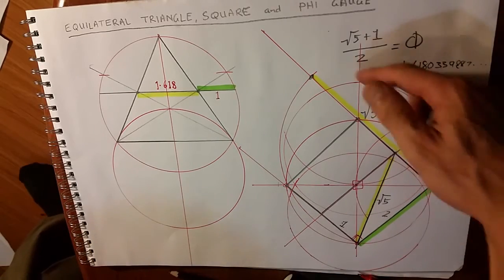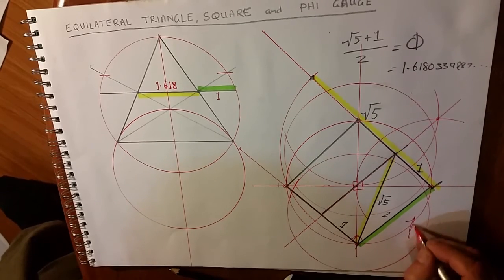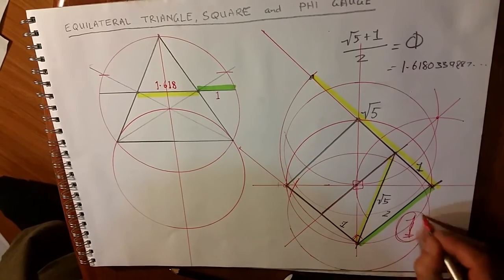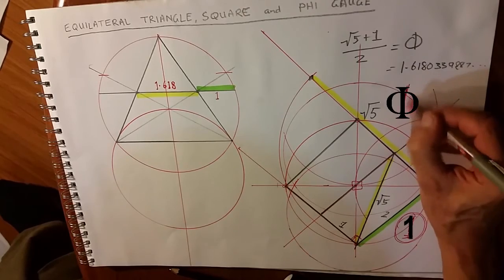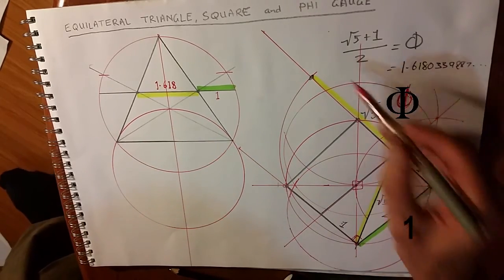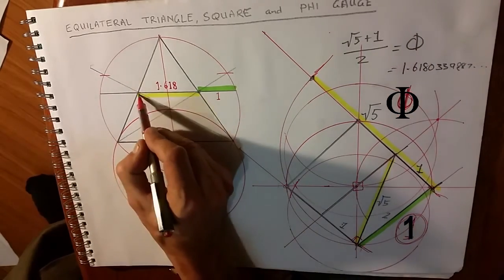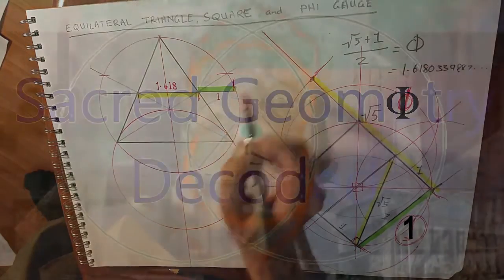So this is now one to five. And we have phi to one.